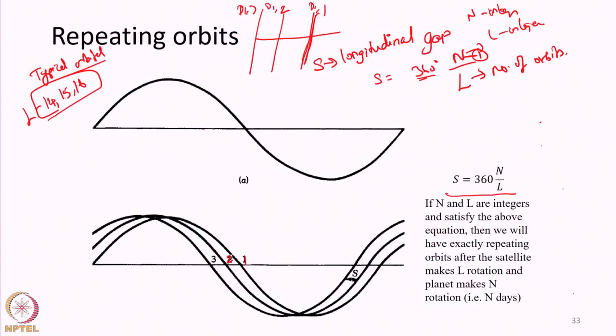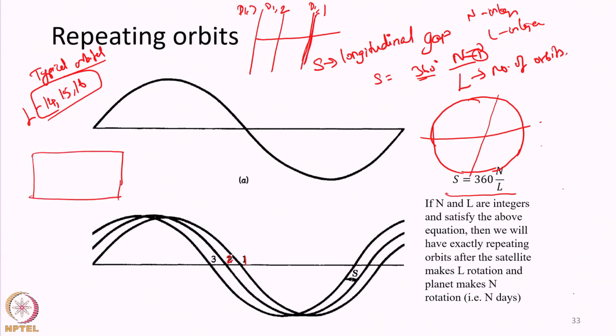We can make the orbit go over the same track again and again every day when the satellite is made to have an exact integer number of orbits in one sidereal day of 86,164 seconds. But normally scientists will not do that.